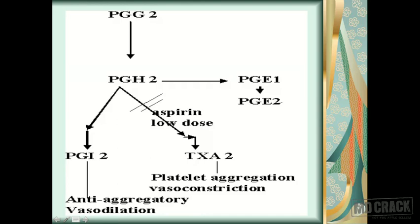Thromboxane A2 produces platelet aggregation and vasoconstriction. In the platelets, prostaglandin H2 gets converted into TXA2. This particular step is inhibited by aspirin in low doses. When you use aspirin in low doses, you get the special effect that thromboxane A2 synthesis is reduced — it inhibits the enzyme thromboxane A2 synthetase. So TXA2 comes down and platelet aggregation is inhibited. This is the novel action of aspirin — in low doses it inhibits platelet aggregation, an anti-aggregatory effect on platelets.